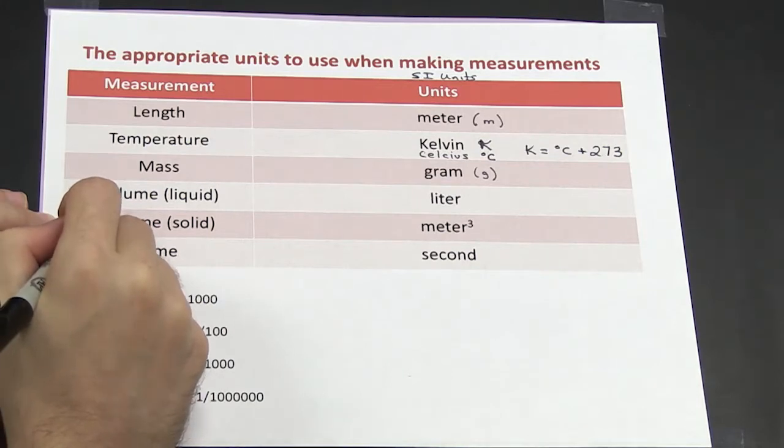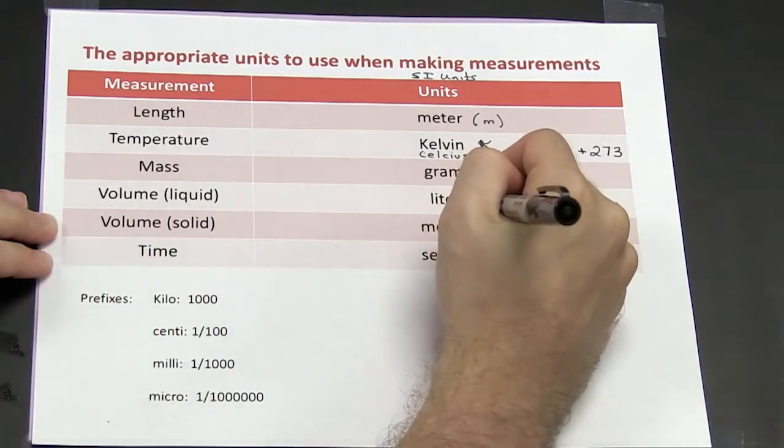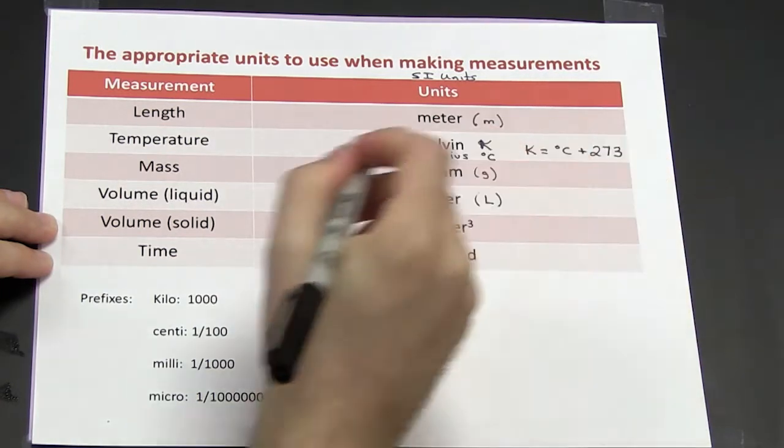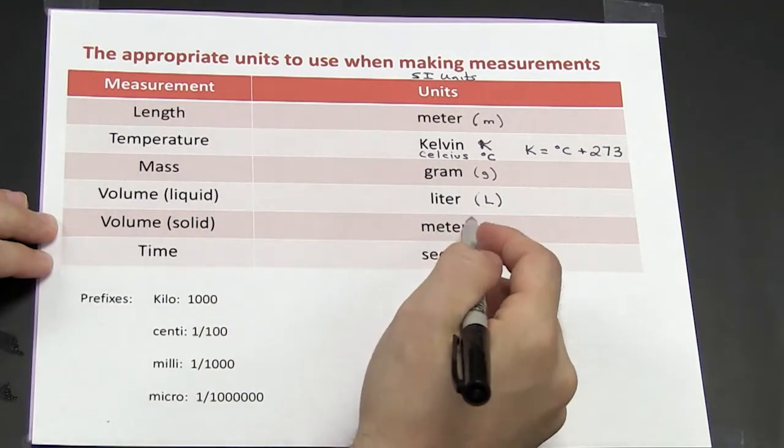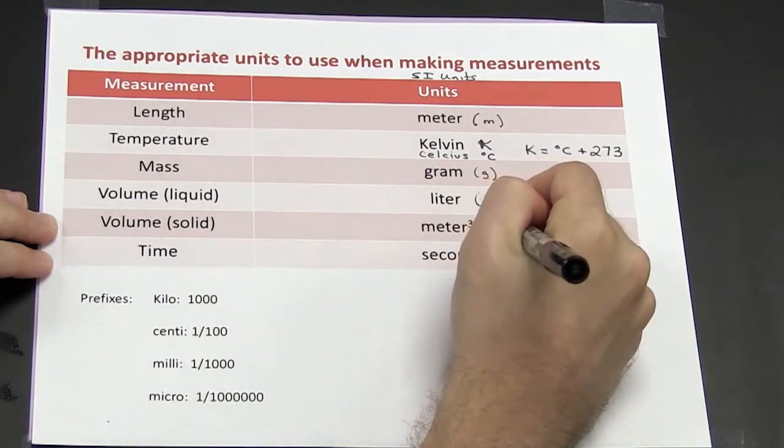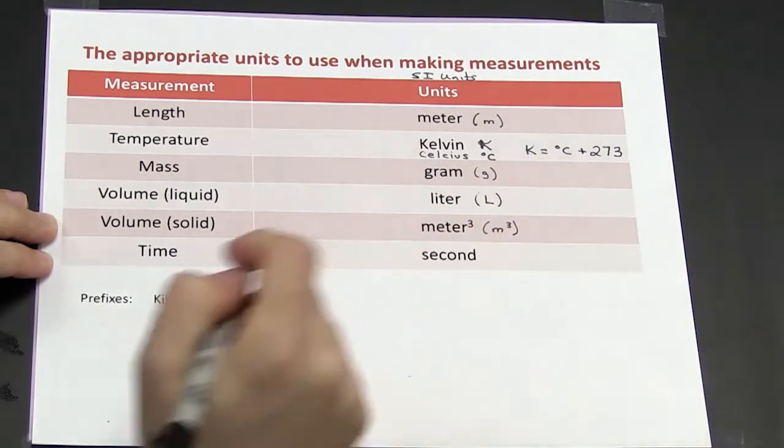The measurement for liquid volumes is the liter, which is capital L. The volume of solids is in meters cubed, little m raised to the third.